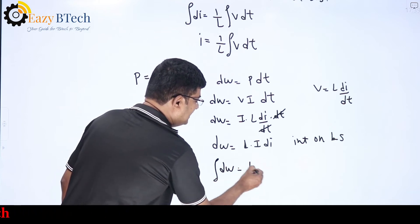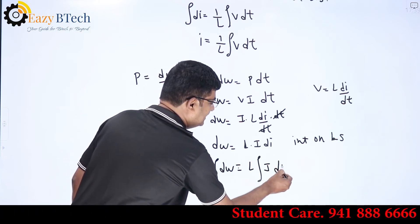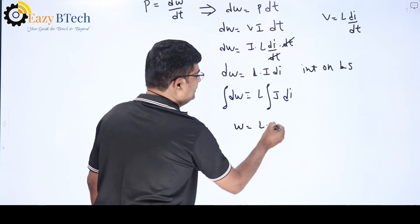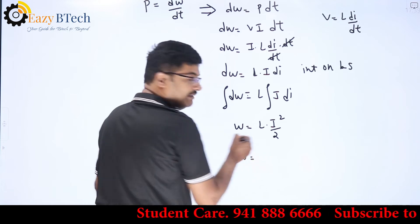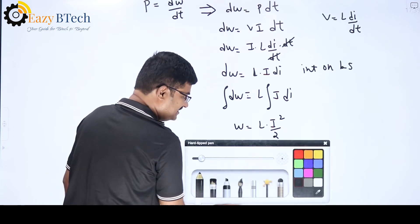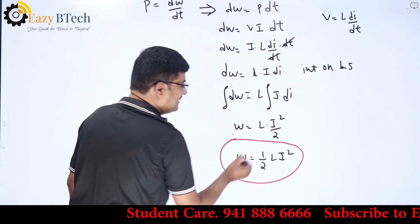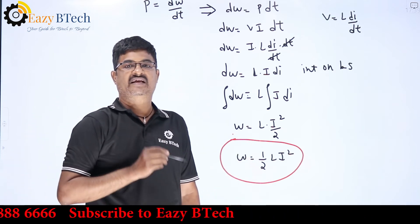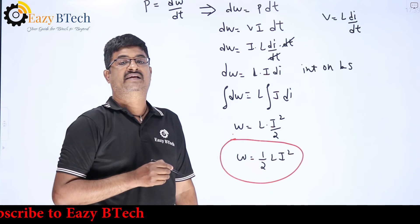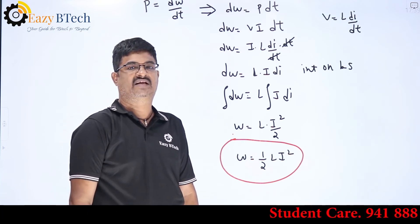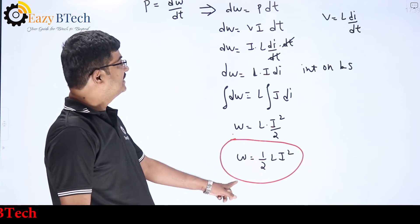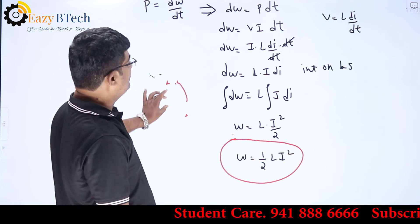Integrating both sides: w = L·i²/2, or w = ½L·i². This is the total energy stored in an inductor. The resistor is a dissipative element, whereas the inductor and capacitor are storage devices — the inductor stores energy in a magnetic field.